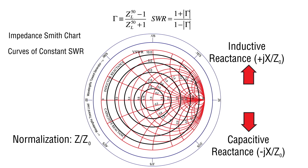Moving clockwise means moving the end of a transmission line toward the generator, or toward the transmitter. And moving counterclockwise means moving the end of a transmission line towards the load. We'll see how this all works in some examples later in this video.